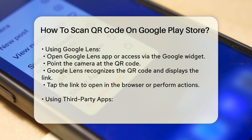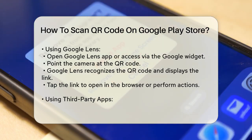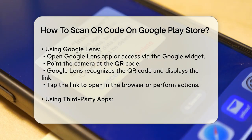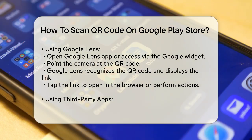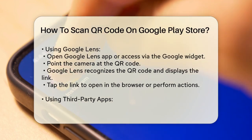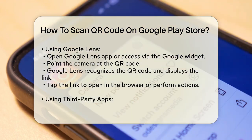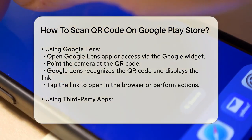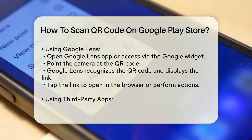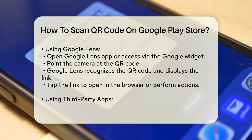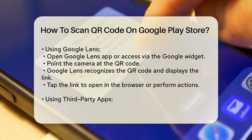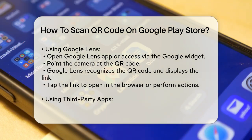Using Google Lens. Google Lens is another powerful tool for scanning QR codes, and it comes pre-installed on most Android devices. Open the Google Lens app or access it through the Google widget on your home screen. Point the camera at the QR code. Google Lens will quickly recognize the QR code and show you the associated link or content. You can tap on this link to open it in your browser or perform other actions like opening apps.